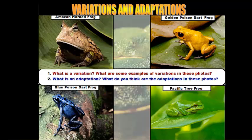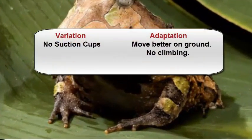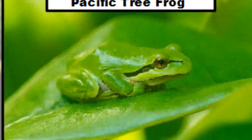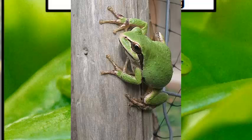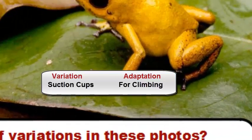Foot shape is also different. The Amazon horned frog lives primarily on the ground, so it doesn't have much reason to climb and doesn't have those suction cups. Tree frogs, as their name suggests, live in trees, so there's a necessity to climb — their foot structures allow them to grip onto tree trunks and branches.